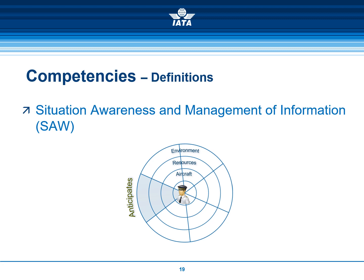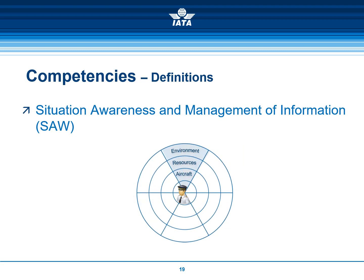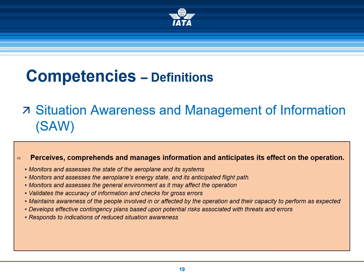In some cases, the radar does not work efficiently. Under low workload, the pilot may be bored and the scanning pace will be lower. Under high workload, the range may be reduced and the outer circles may not be scanned. Both cases may lead to poor situation awareness. Please have a look at the observable behaviors.